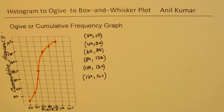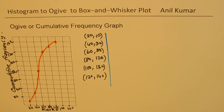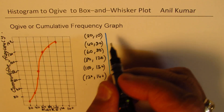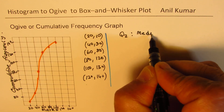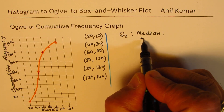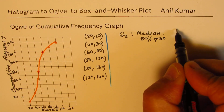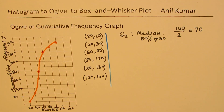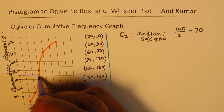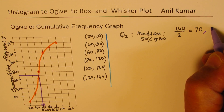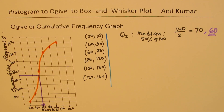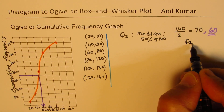Now we need to find the quartile values. We have 140 students in total. Q2, also called the median, is at the 50th percentile, so we divide 140 by 2 to get 70. At the position of 70 on the cumulative frequency graph, we read across and get a marks value of 60. So the median Q2 equals 60.